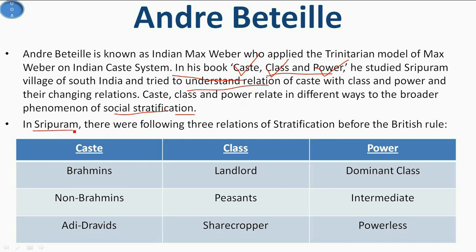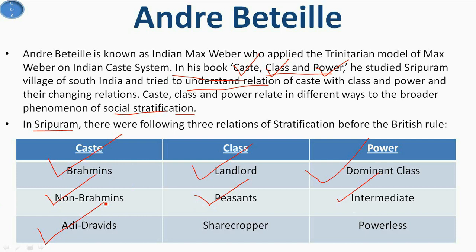In Sriramapuram village before the British rule, the Brahmins were basically the landlords and had the dominant class. The non-Brahmans were basically peasants or intermediaries having less power than the Brahmins. And the third caste, the Adi Dravidas, were basically sharecroppers or landless farmers and they were powerless at that time.